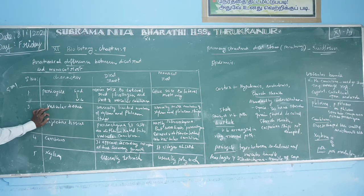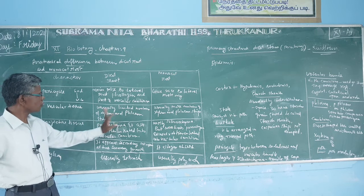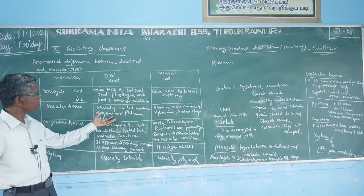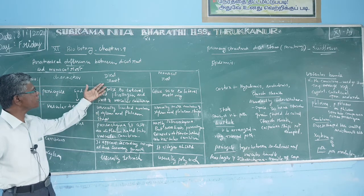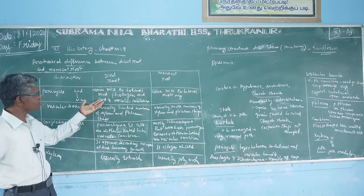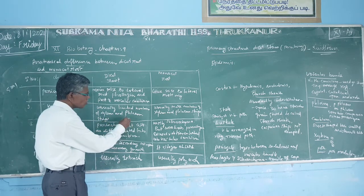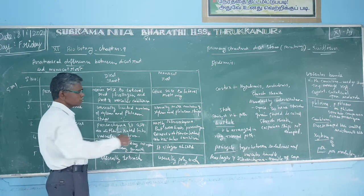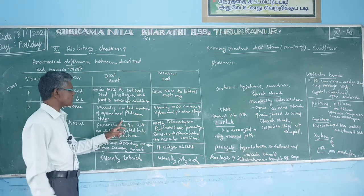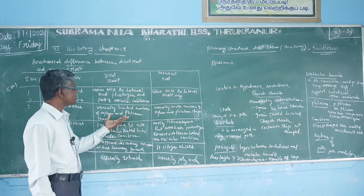Next is vascular tissue. In the dicot root, there is usually a limited number of xylem and phloem strands. There are four protoxylems.